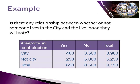Now let's work through an example of the chi-square test. Here we have a table which gives us the likelihood of somebody voting and the area that they live in — whether they live in a city or not in a city. So we're looking at whether there is a relationship between where someone lives, either in a city or not in a city, and the likelihood of them voting.